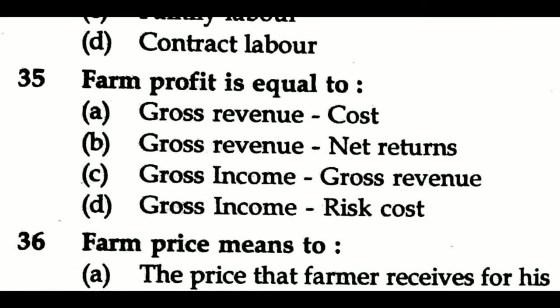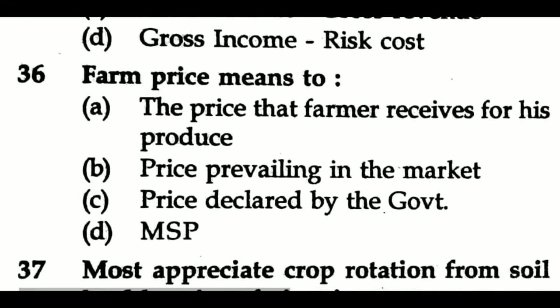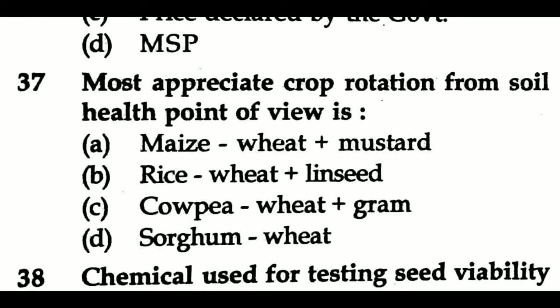Question 35: Firm profit is equal to — Option A: gross revenue minus cost, Option B: gross revenue minus net returns, Option C: gross income minus gross revenue, Option D: gross income minus risk cost. Question 36: Farm price means — Option A: the price that farmer decides for his produce, Option B: price prevailing in the market, Option C: price declared by the government, Option D: MSP. Question 37: Most appropriate crop rotation from soil health point of view is — Option A: maize-wheat-mustard, Option B: rice-wheat-linseed, Option C: cowpea-wheat-gram, Option D: sorghum-wheat.